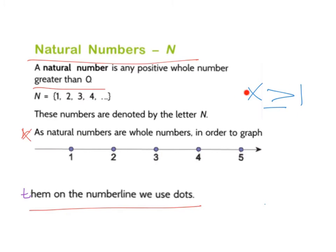And so this here, we're told X is greater than or equal to 1. And you can see, well, the first number would be 1, 2, 3, 4, 5. So natural numbers, the symbol is N, they're positive whole numbers, and you use dots on your number line. They're the three biggest things to remember there.